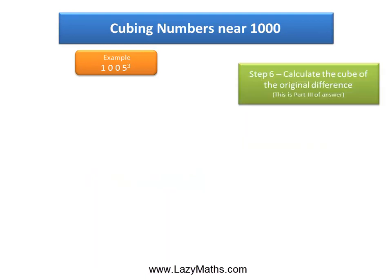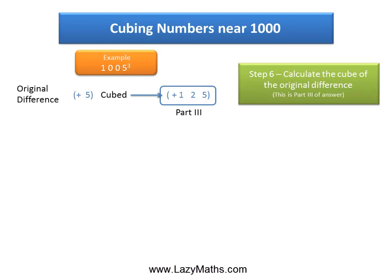To get part 3 of the answer, look at the original difference again, but this time simply cube that original difference of positive 5. So positive 5 times positive 5 times positive 5 gives us positive 125. This becomes part 3 of the answer.